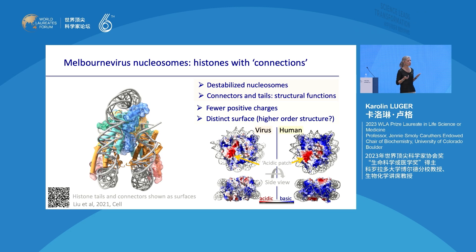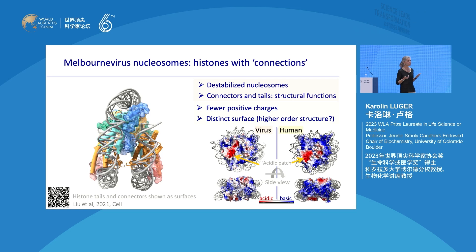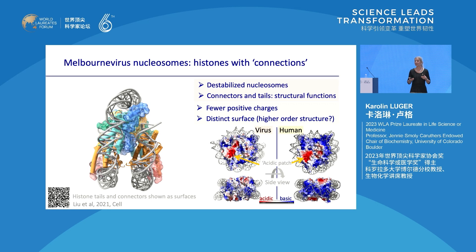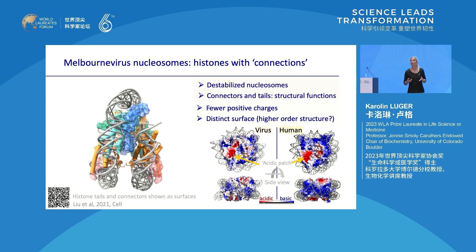This overall structure resembles that of the eukaryotic nucleosome, but the tails and connectors that connect the two fused histones have profoundly different roles — they have structural roles rather than serving as targets of epigenetic modifications. Shown here in space-filling form, they help stabilize this structure rather than serving to be acetylated for signaling functions. These histones have fewer positive charges and a very distinct surface, which implies that they might pack differently to form the compact higher-order structure in viral chromatin.